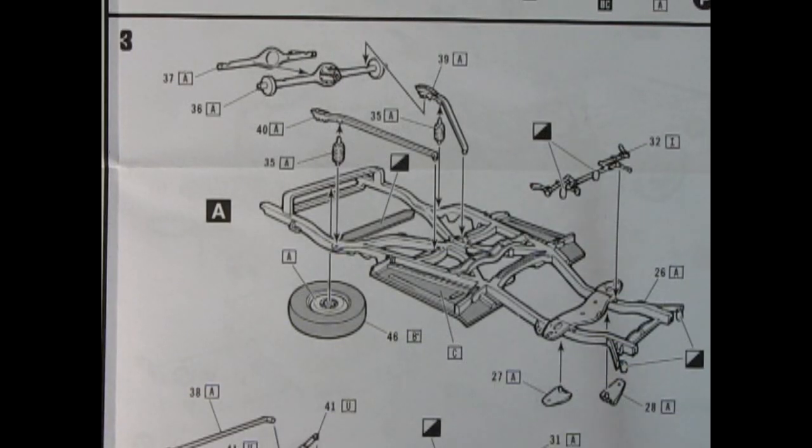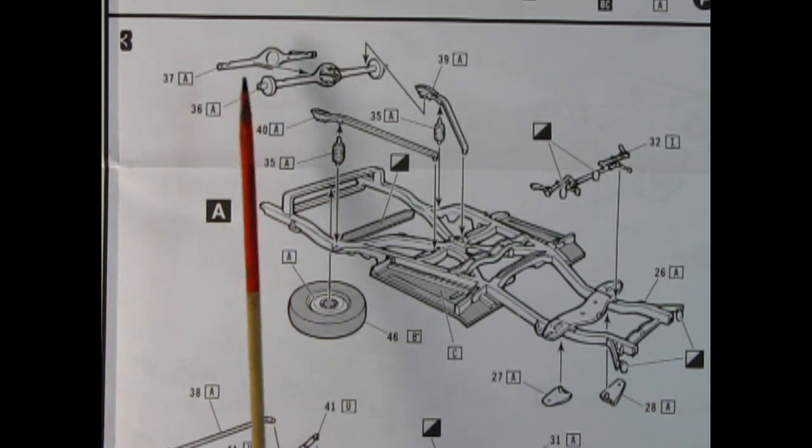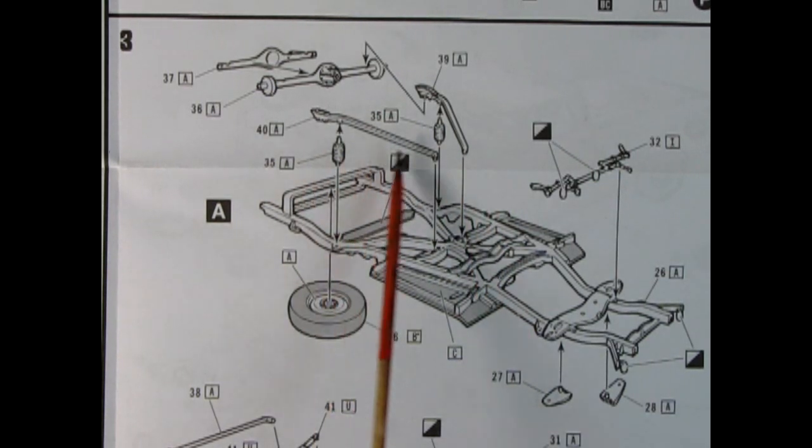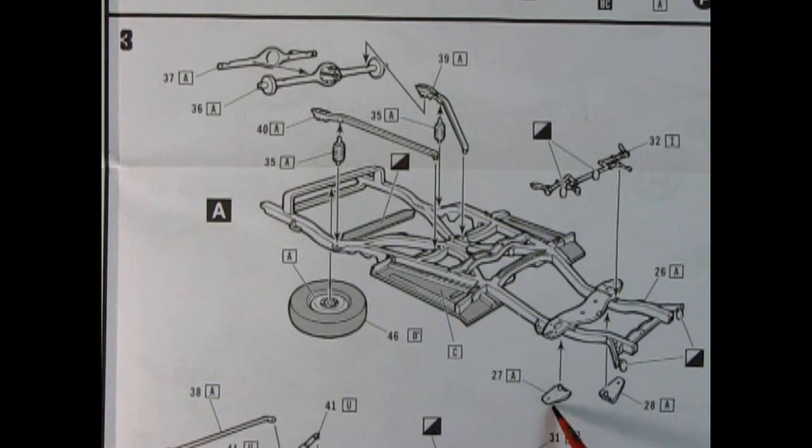Moving on to step number three, we have our chassis and undercarriage. This is the first part of the assembly. Here we have a two-piece differential with the front and back gluing together. We also have these stabilizer bars and springs. Here we've got our spare tire being glued up underneath. And we also have our front steering, as well as the upper A arms, which will glue on on the other side.